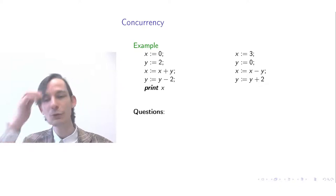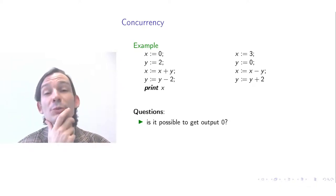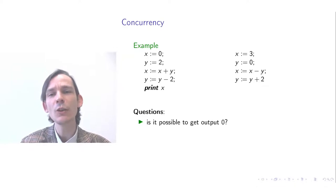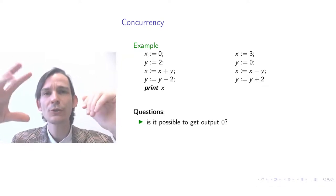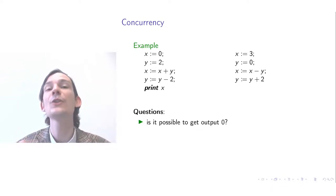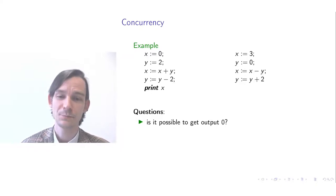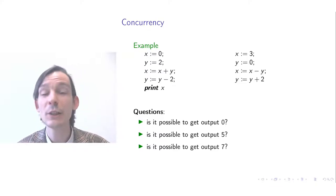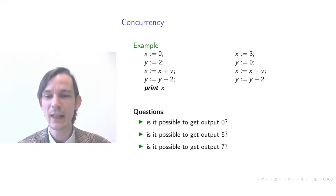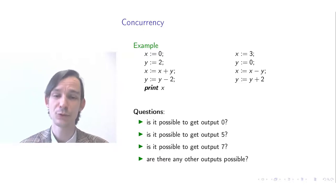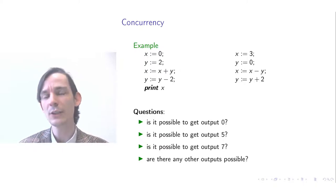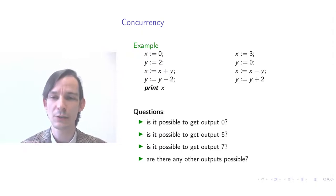For the same program you could ask: is it possible to get output zero? Try to think in what order you could let the processes run such that the print statement outputs zero. Is it also possible to get output five? Yes, we've seen that. Is it possible to get output seven? And are there any other outputs possible beyond zero, three, five, or seven? To answer that question, we have to dive a little more into the details of what is going on.